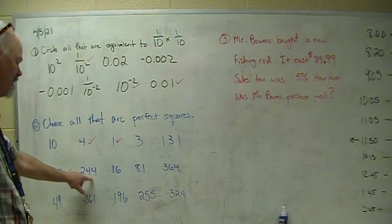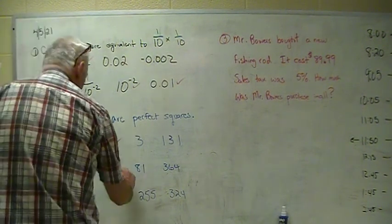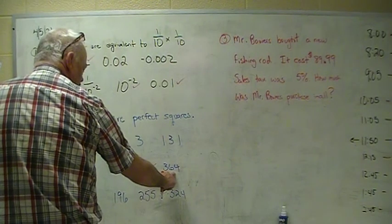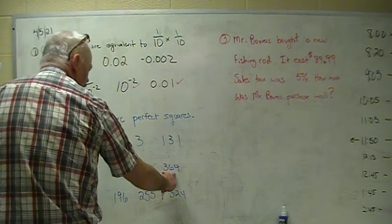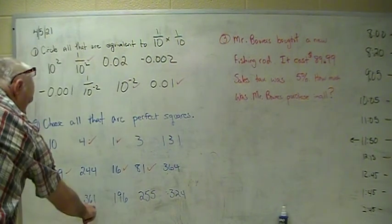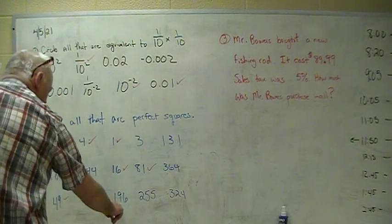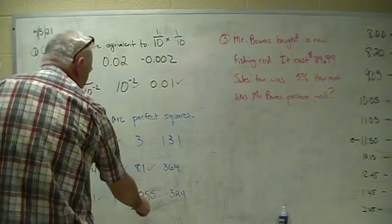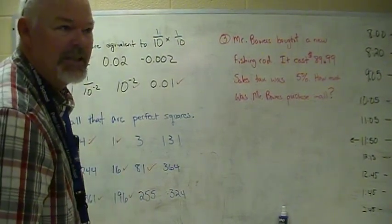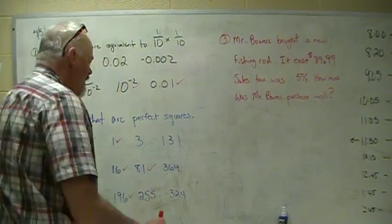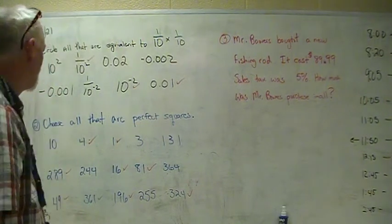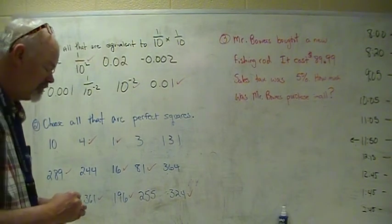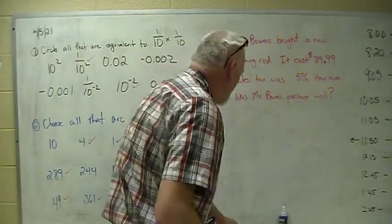Four times four, nine times nine, not a perfect square. We're looking - 19 times 19 is 361, that's 364. Seven times seven, there's 361, that's 19 times 19. 196 is 14 times 14, that's a perfect square. 255 is not a perfect square - 256 is 16 times 16. And this is 18 times 18, 324. So you should have had one, two, three, four, five, six, seven, eight, nine of them checked.